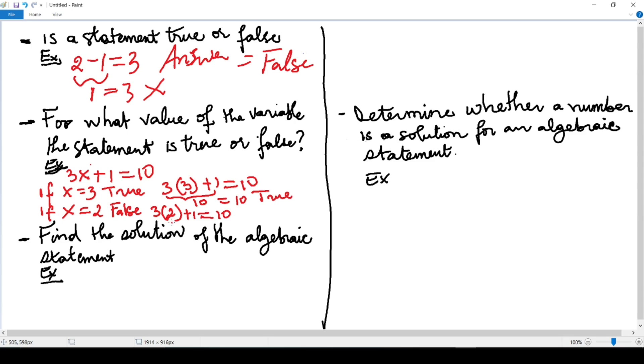3 times 2 will give me 6, 6 plus 1 equals 7. So 7 equals 10, which is not true, right? Another question is: find the solution of the algebraic statement.